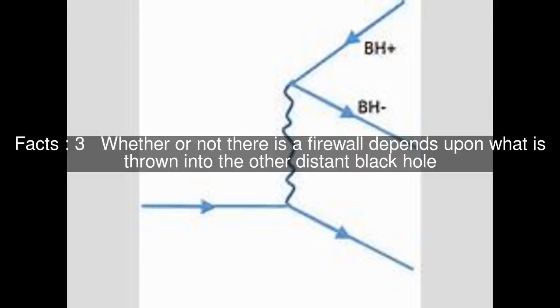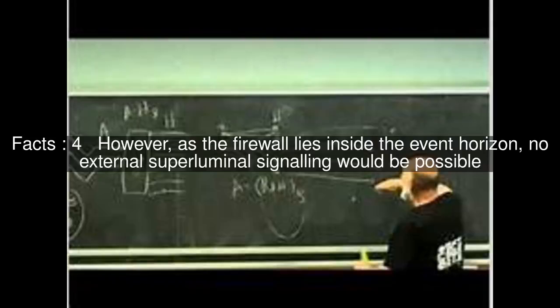Whether or not there is a firewall depends upon what is thrown into the other distant black hole. However, as the firewall lies inside the event horizon, no external superluminal signaling would be possible.